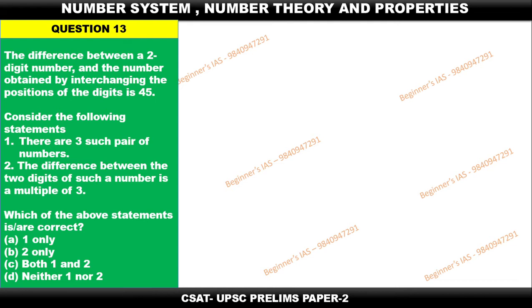Consider the following statements: 1. There are three such pairs of numbers. 2. The difference between the two digits of such a number is a multiple of three. Which of the following statements is or are correct?